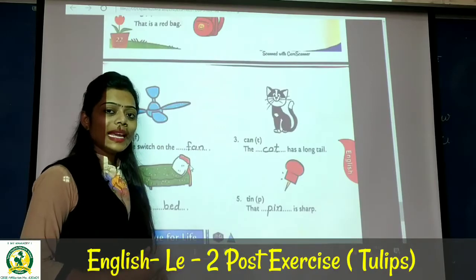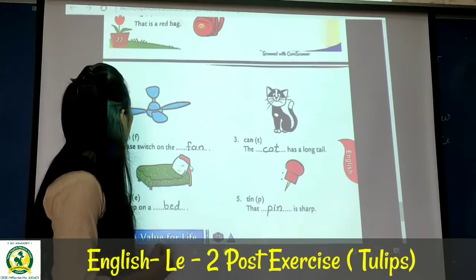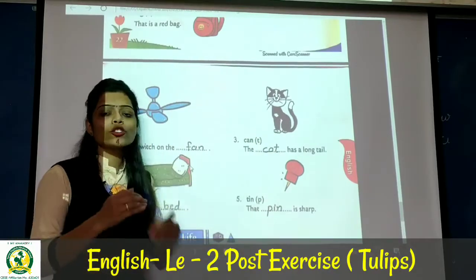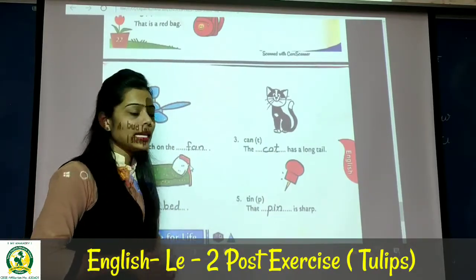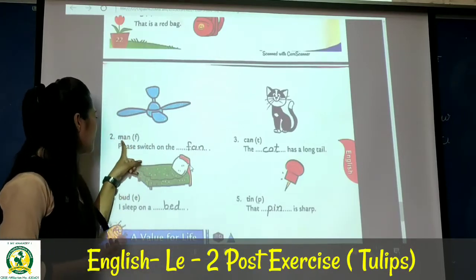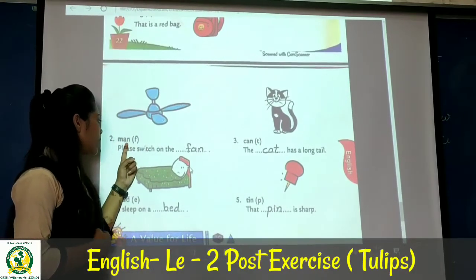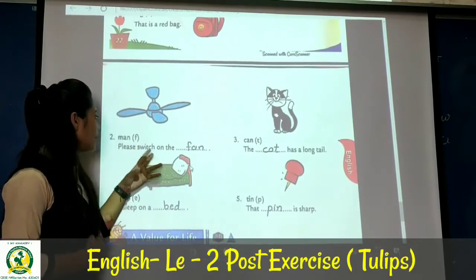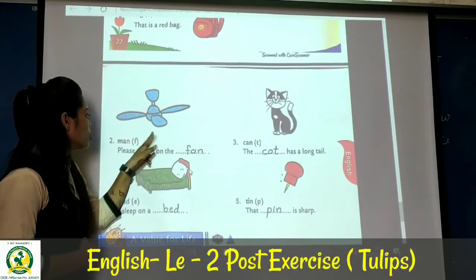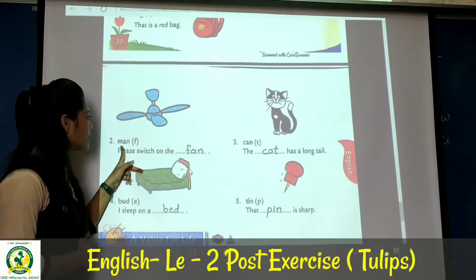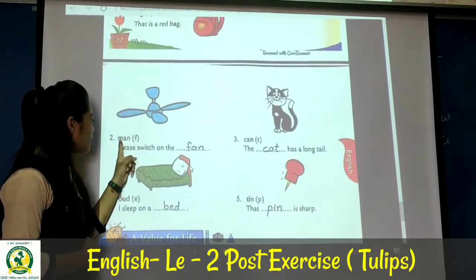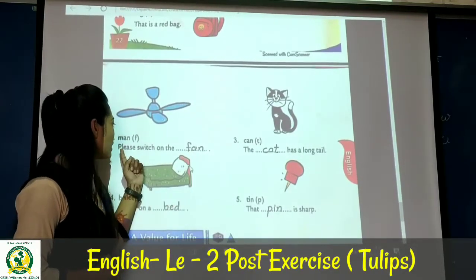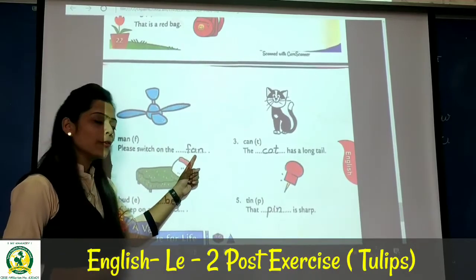On page number 30 there is writing skill. A picture is given and you write the missing letters. First: M-A-N man, with bracket showing 'f'. The picture is a fan, so replace 'm' with 'f' to make the word 'fan.' For example: please switch on the fan.